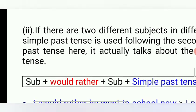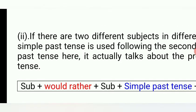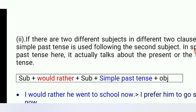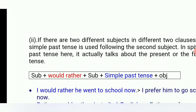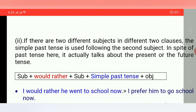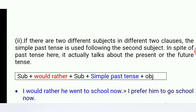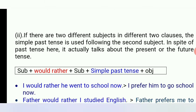Now going to the second construction. If there are two different subjects in two different clauses, simple past tense is used following the second subject. In spite of the past tense here, it actually talks about the present or the future. Structure: Subject + would rather + second subject + simple past tense + Object.